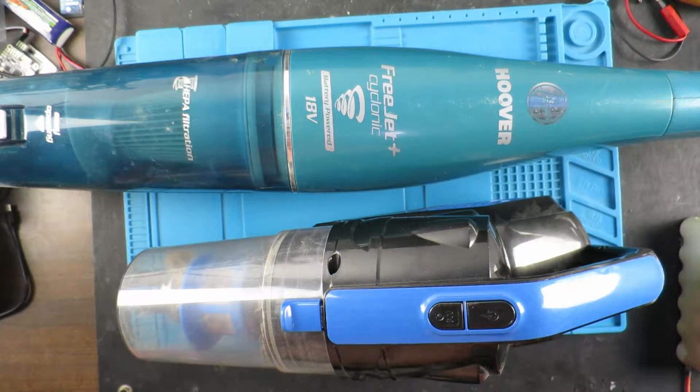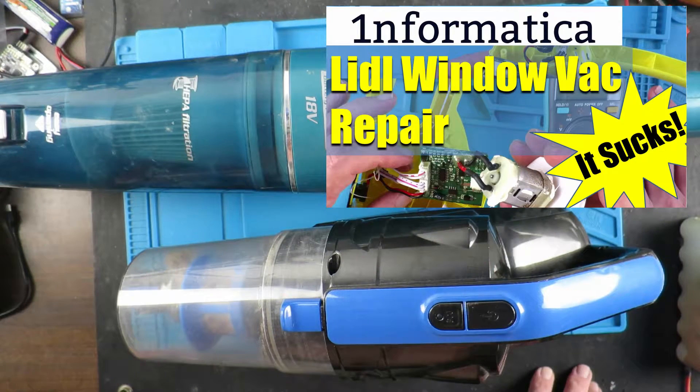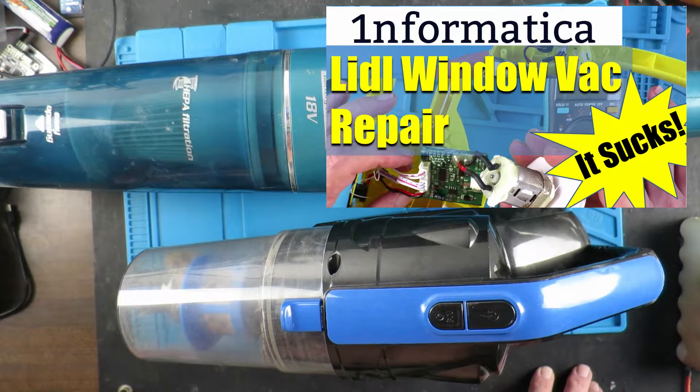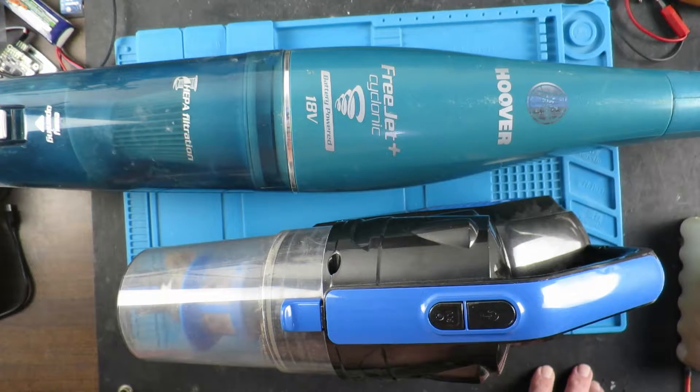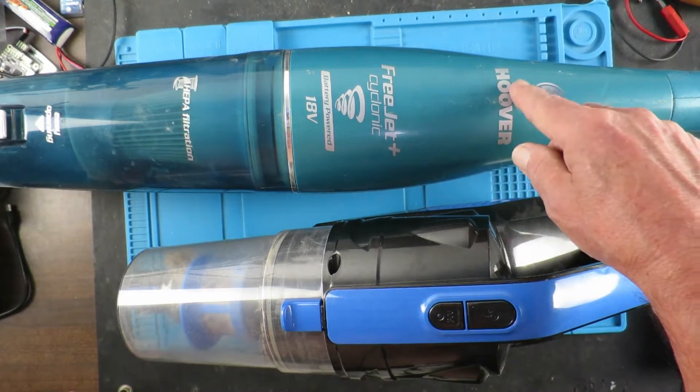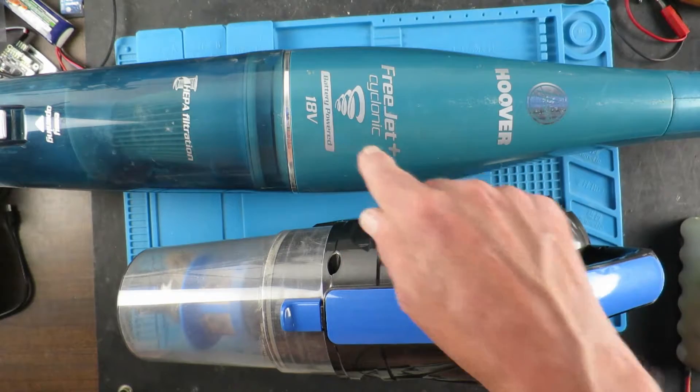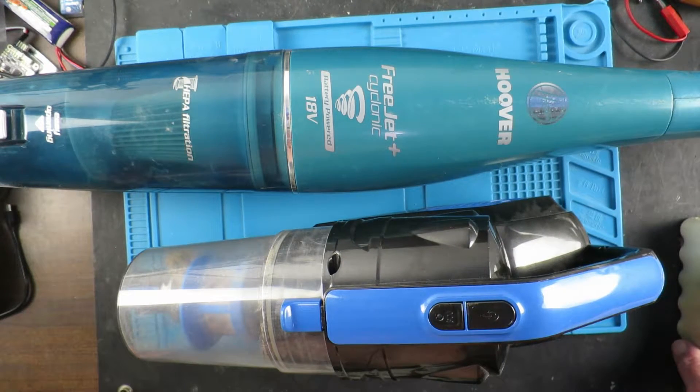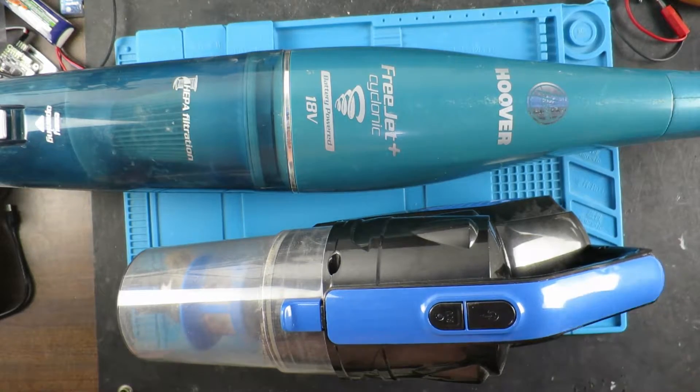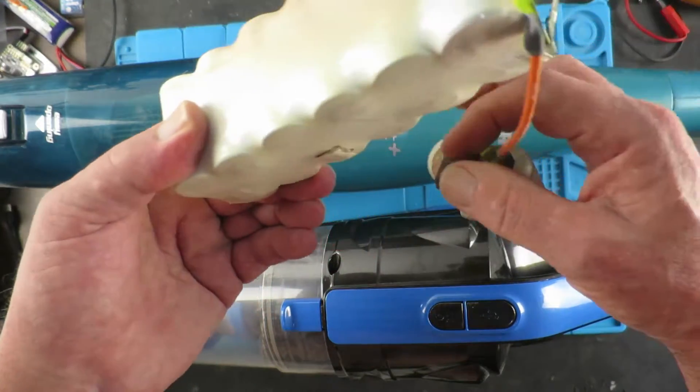After word got around that I'd repaired the little window vacuum, suddenly two more appear. This guy is quite an old Hoover, 18 volts it says, and wasn't charging or working. That's relatively easy to find out why.